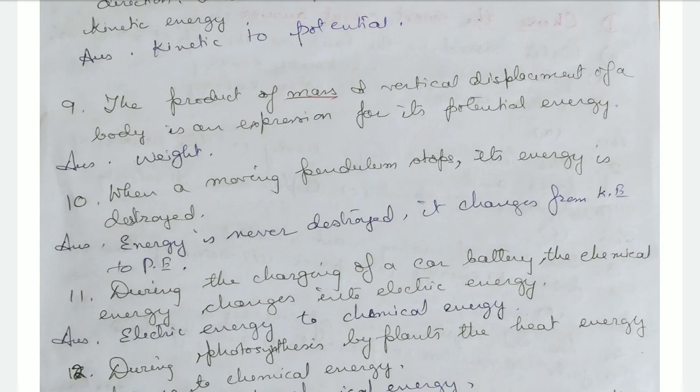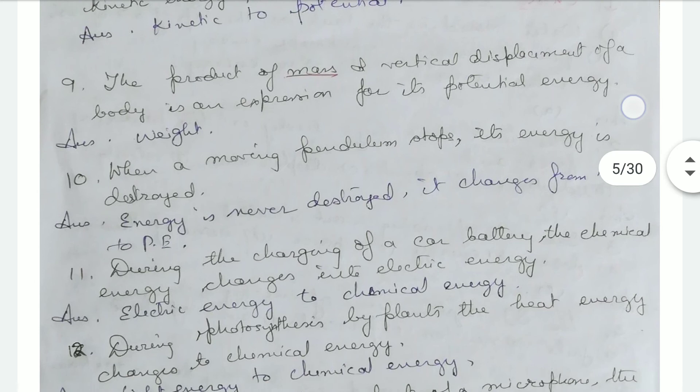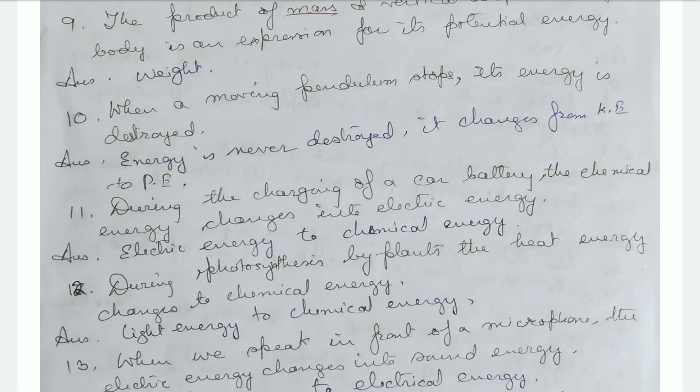When a moving pendulum stops, its energy is destroyed — correction: energy is never destroyed. It changes from kinetic to potential and potential to kinetic. During the charging of a car battery, chemical energy changes into electrical energy — correction: electrical energy changes into chemical energy.